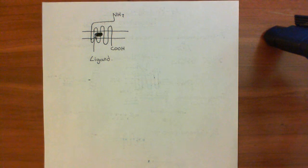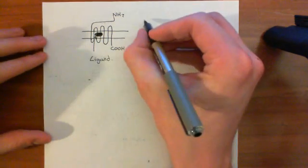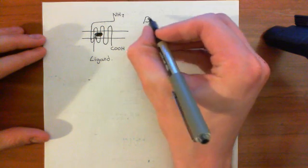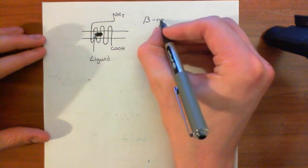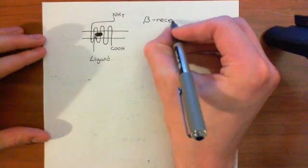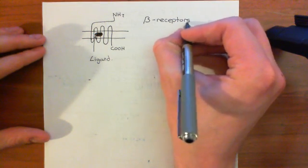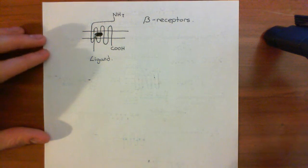Some examples of members of the rhodopsin family of G-protein-coupled receptors: probably the most famous example would be the beta adrenoreceptors — the beta-1 receptor, the beta-2 receptor, and the beta-3 receptor. Those are all members of this rhodopsin family of G-protein-coupled receptors.